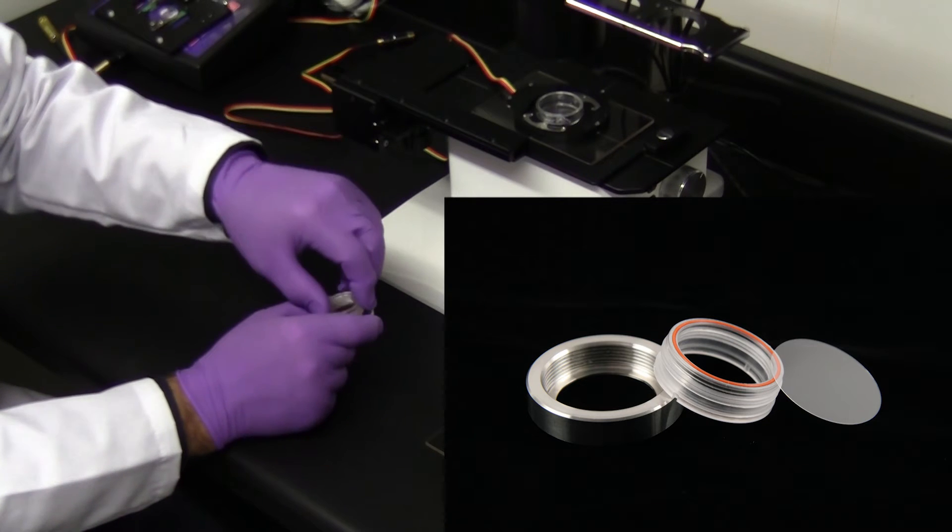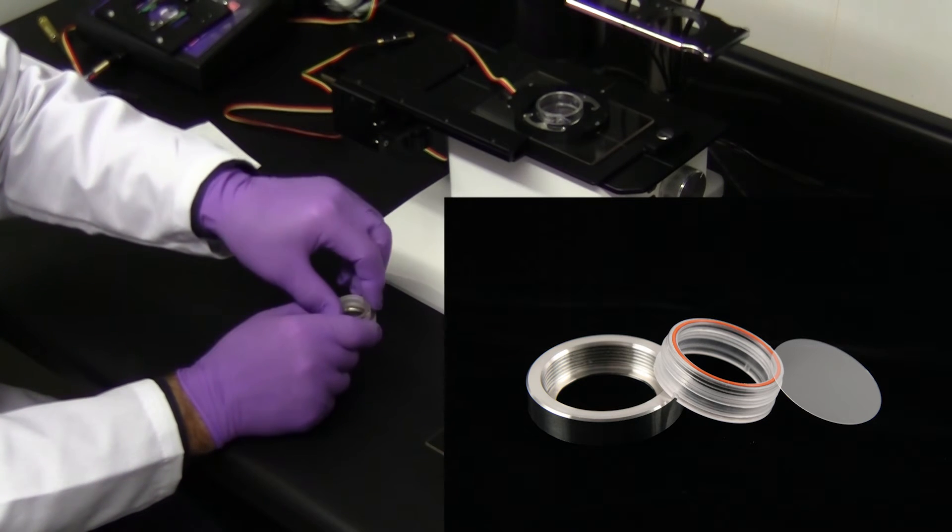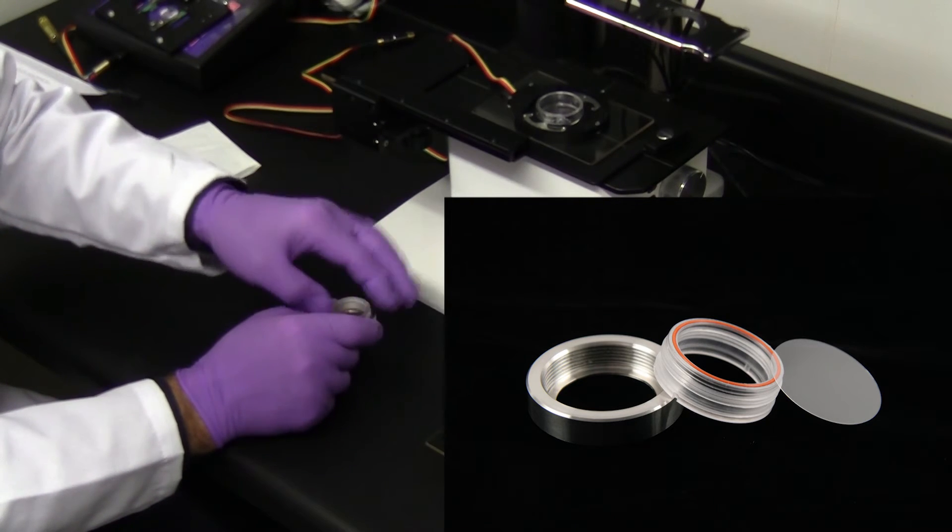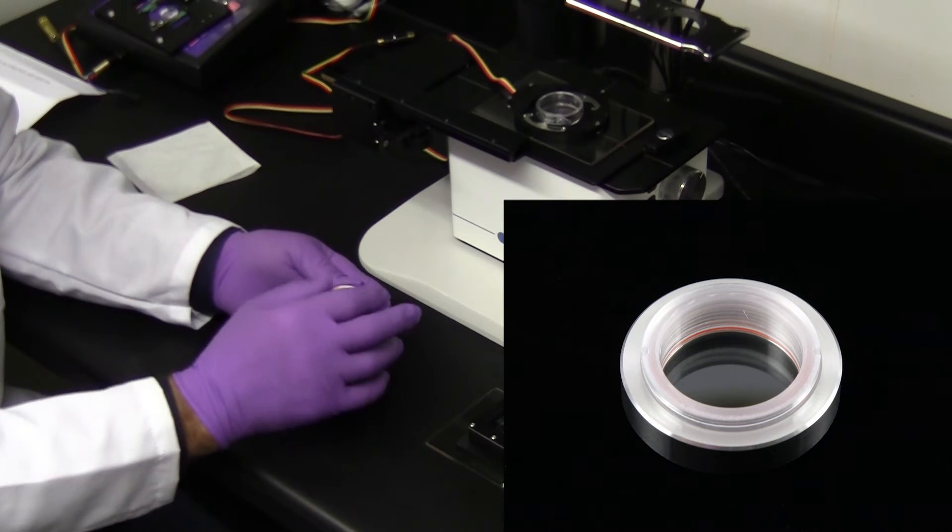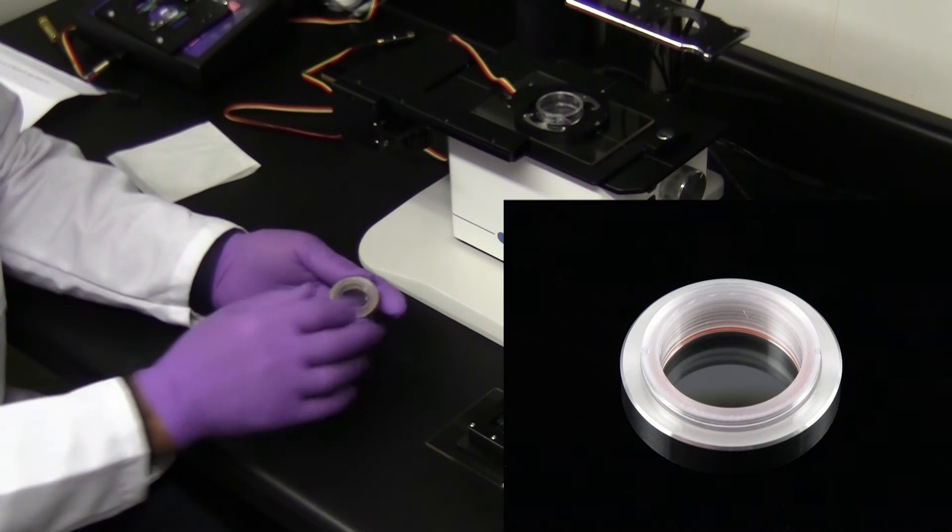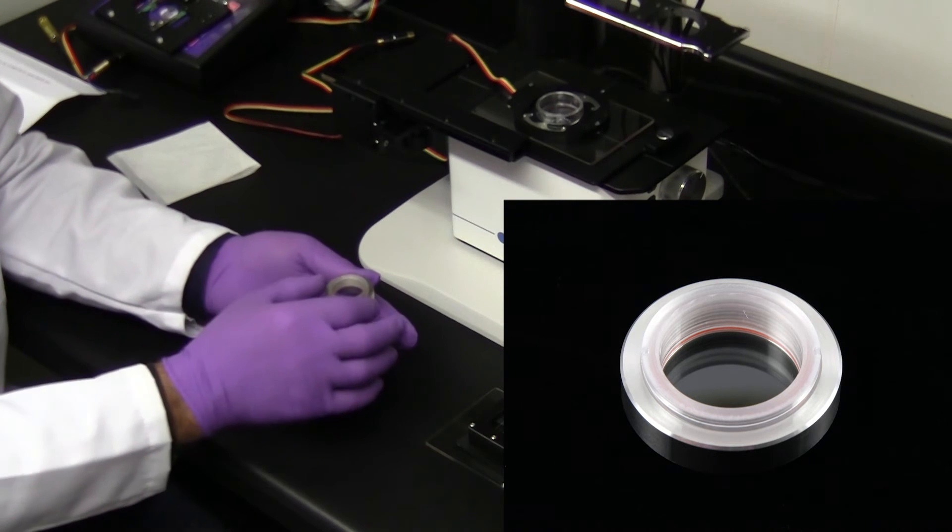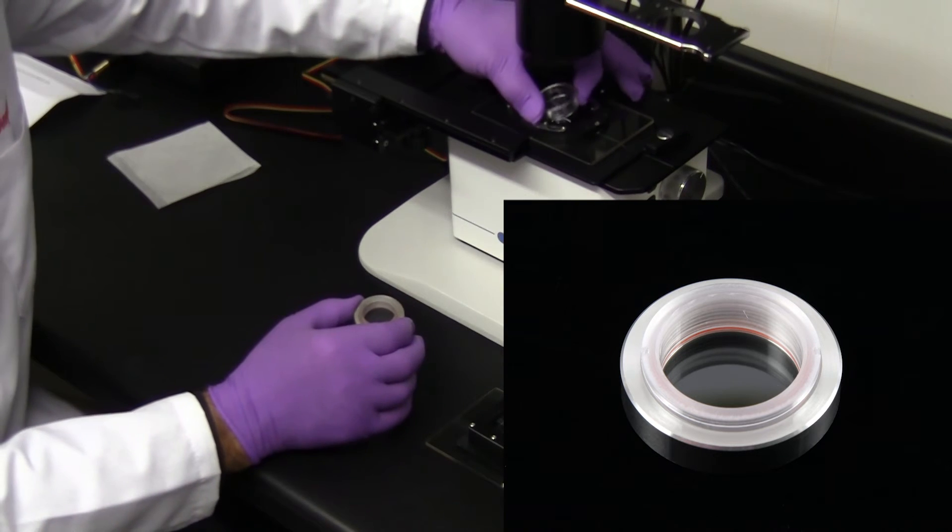The coverslip is retained by a polycarbonate threaded sleeve, having an O-ring making contact with the cover glass. Therefore, media never touches the metal. It is fully autoclavable, and customers can make their own coverslip bottom dishes for only the cost of a coverslip.